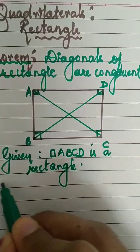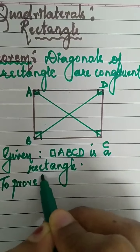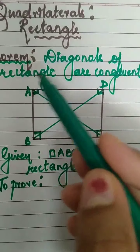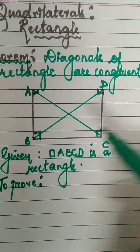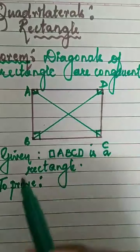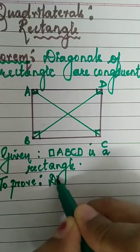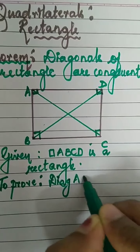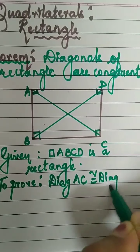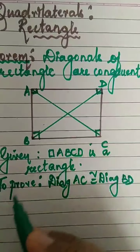To prove: we want to prove that the diagonals are congruent. We know this is a rectangle. To prove the diagonals are congruent means diagonal AC is congruent to diagonal BD. This is what we want to prove.